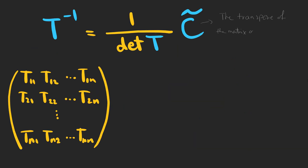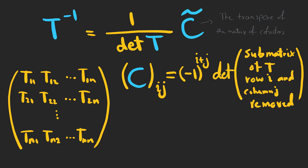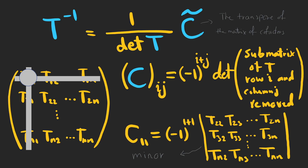The inverse of a matrix is calculated using a formula in which C is the matrix of cofactors, and the determinant of T must be non-zero. If the determinant of a matrix is zero, it has no inverse. The cofactor matrix is calculated by multiplying (-1)^(i+j) by the determinant of the submatrix formed from T with the i-th row and j-th column removed. The first element of the cofactor matrix uses this expression, and this determinant is called the minor.